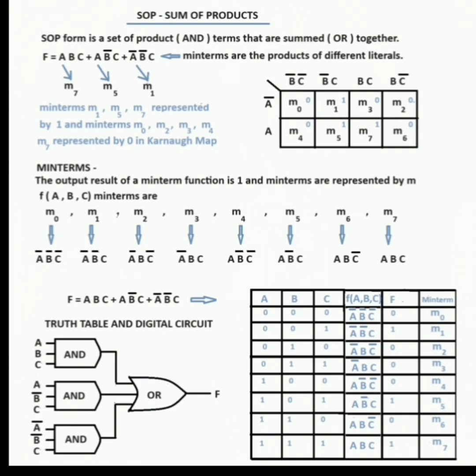The digital circuit for the function F equals ABC plus AB complement C plus A complement B complement C is implemented with 3 NAND gates and 1 OR gate.